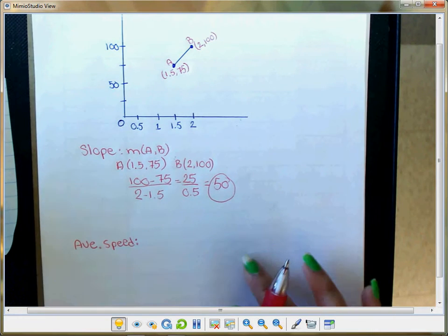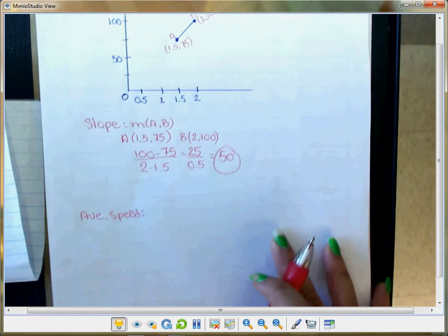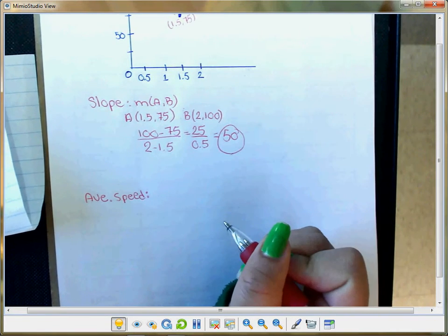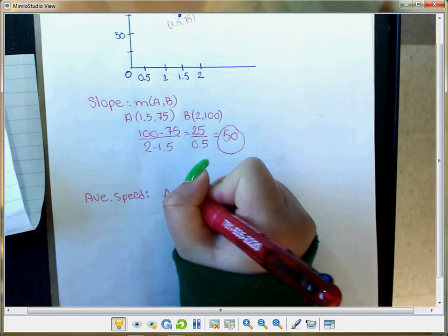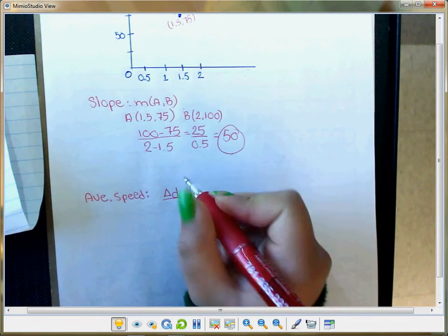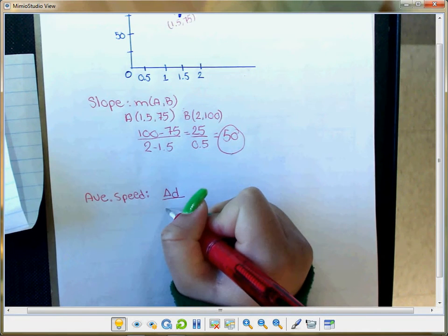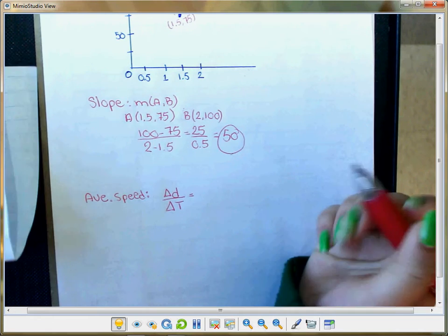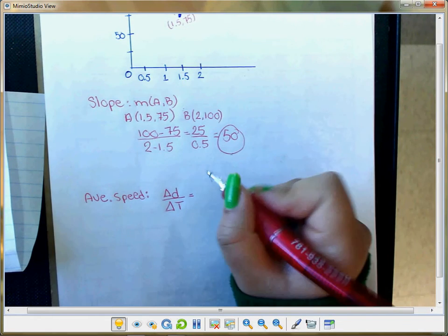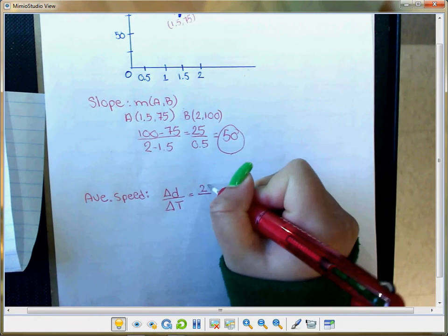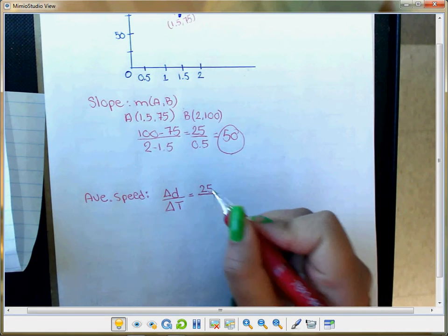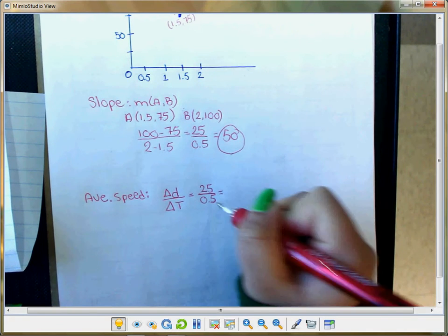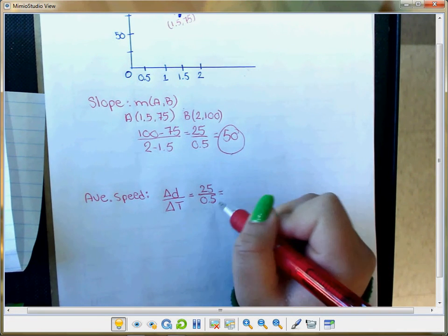For the average speed, you have change in distance and change in time. So it's 25 and 0.5, and you do the same thing - divide the top by the bottom, and you have 50 miles per hour.